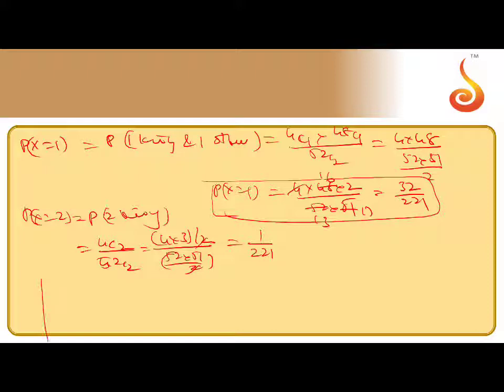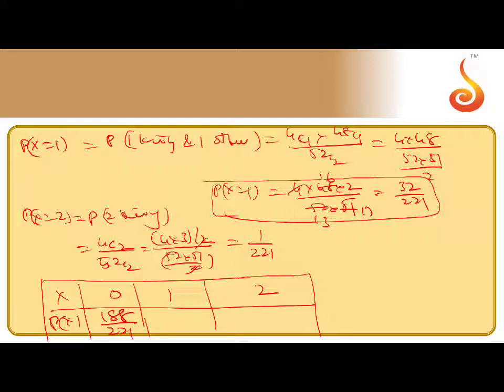Now you can take probable distribution table for this data. P of X equal to X equal to X, 0 kings, 1 kings, 2 kings. For 0 kings, we got as 188 by 221. This will be 32 by 221, 1 by 221 comes here. Now, let us take the mean and variance.